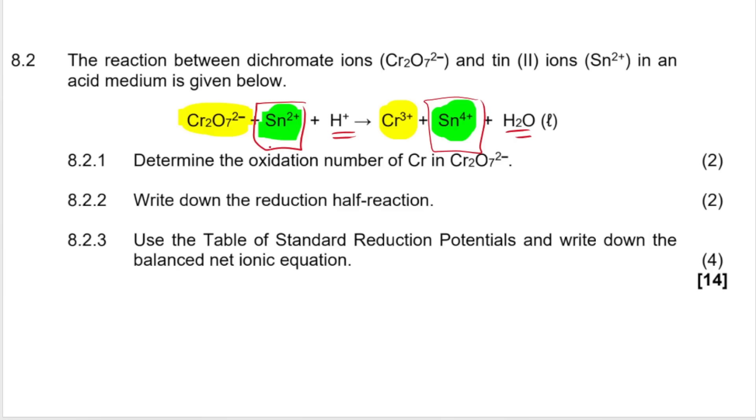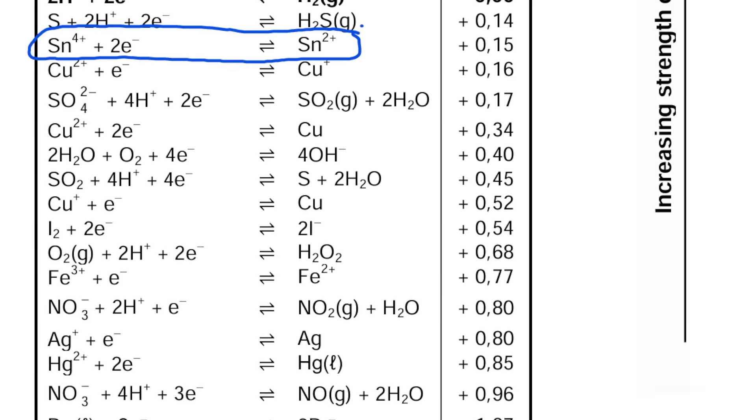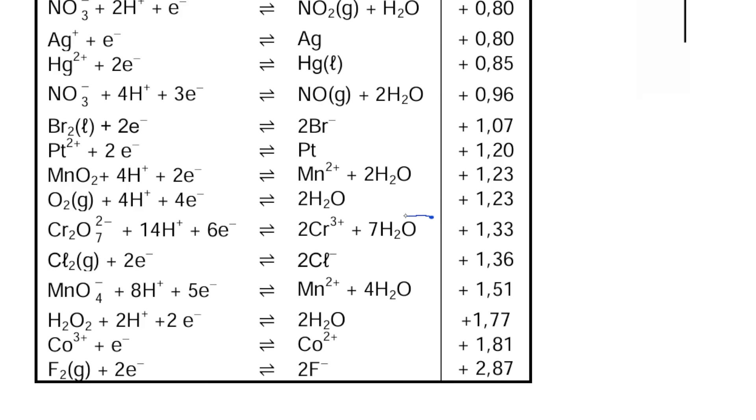So if we take a look at table 4B, as you can see here, table 4B, standard reduction potentials. And we look for the two reactions that I've highlighted from what was given. Remember, we're looking for one reaction that has Sn²⁺ on one side and Sn⁴⁺ on the other side. Not necessarily that one on the left and that one on the right, but one on either side of the arrow. And then Cr₂O₇²⁻ on the one side and Cr³⁺ on the other side. So we're looking for those pairs.